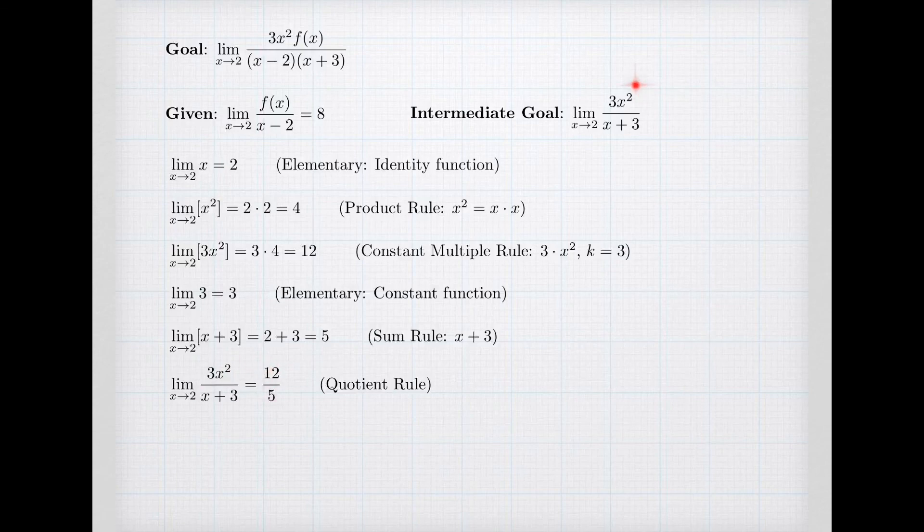So I've got the limit of both factors now. And so I can combine them using the product rule. The limit of a product is the product of the limits. And f(x) over (x-2) has a limit of 8. And 3x² over (x+3) has a limit of 12 fifths. For a grand final limit of 96 fifths.